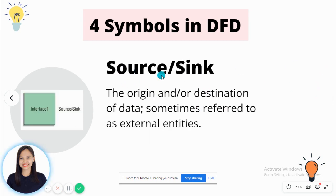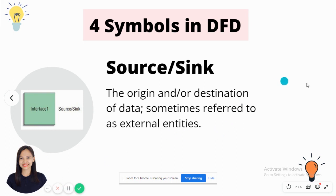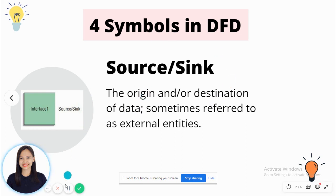Next is the source or the sink. This is the symbol of source or sink. It is a square and the name of the source is placed inside. Source or sink is the origin and/or destination of data, sometimes referred to as external entities. Those are the definition of Data Flow Diagram and the four symbols in Data Flow Diagram.